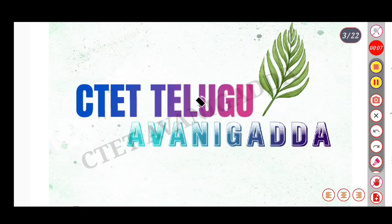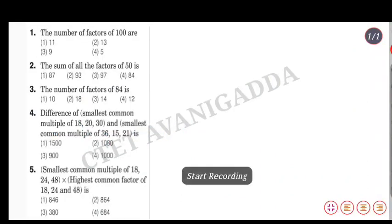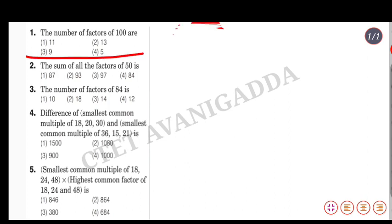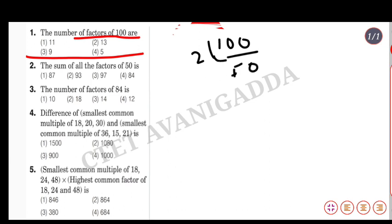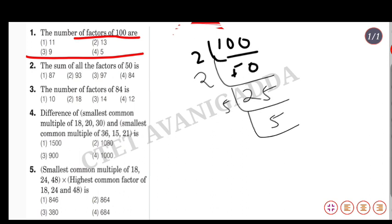Welcome to the math practice session. The first question is: find the number of factors of 100. We start by prime factorizing 100. Breaking it down: 250, 250, 250, 5 and 5. We get 2 power 2 and 5 power 2.